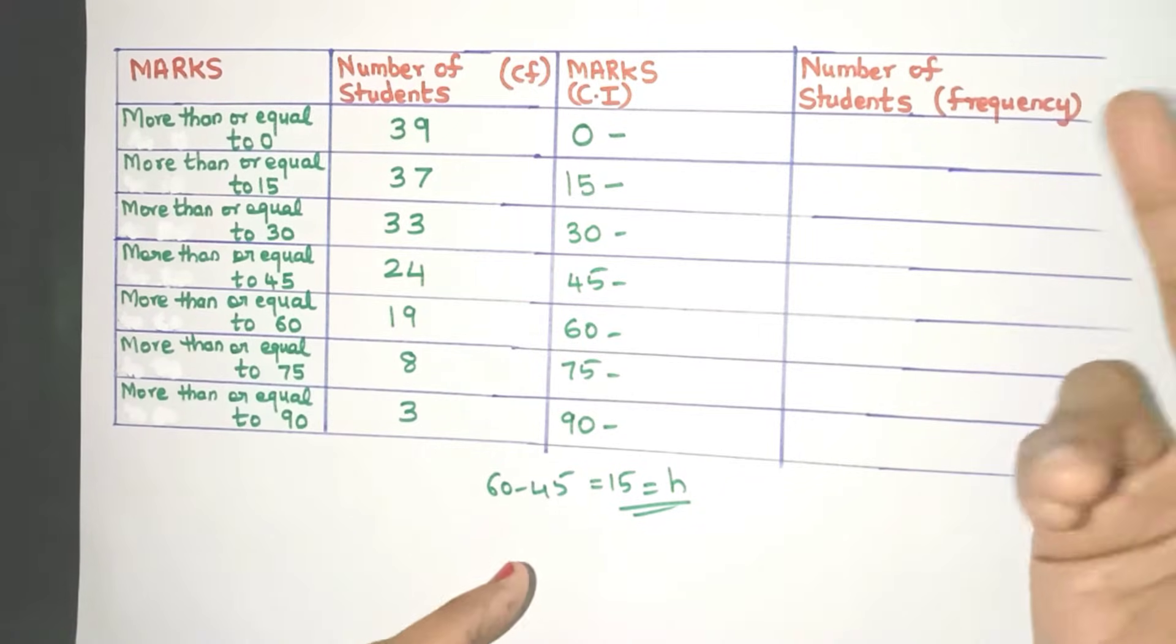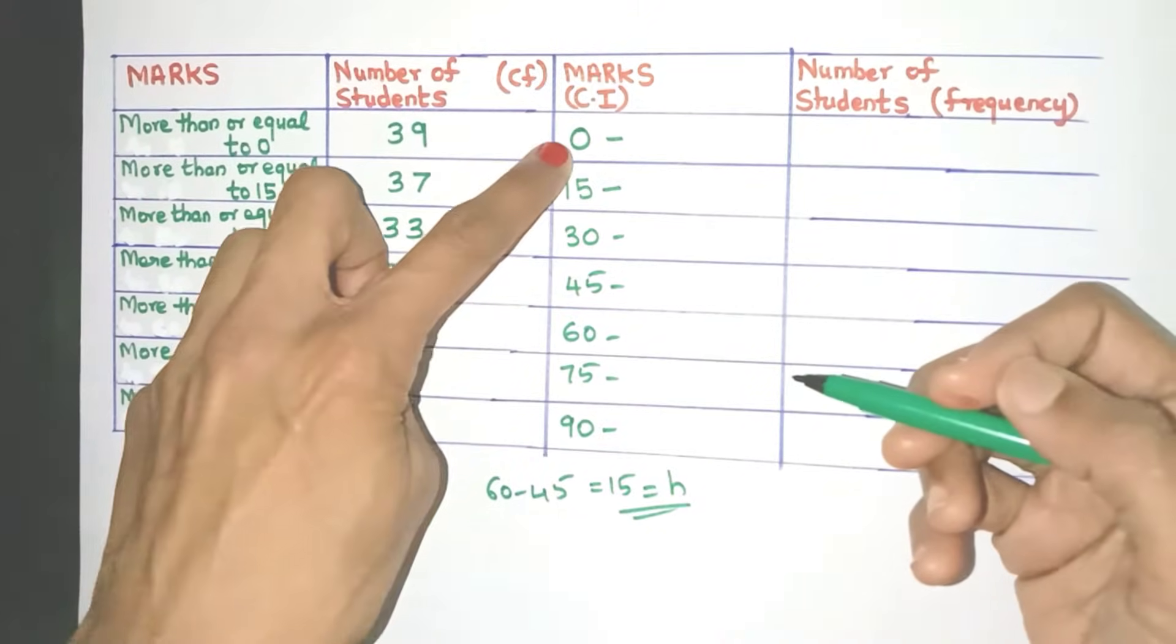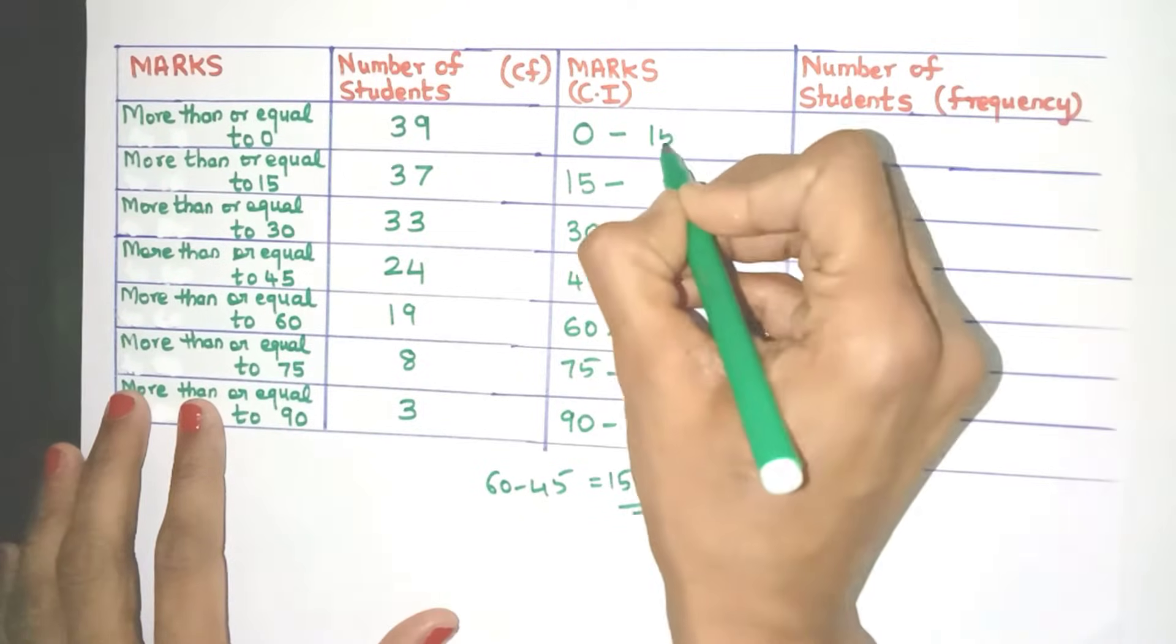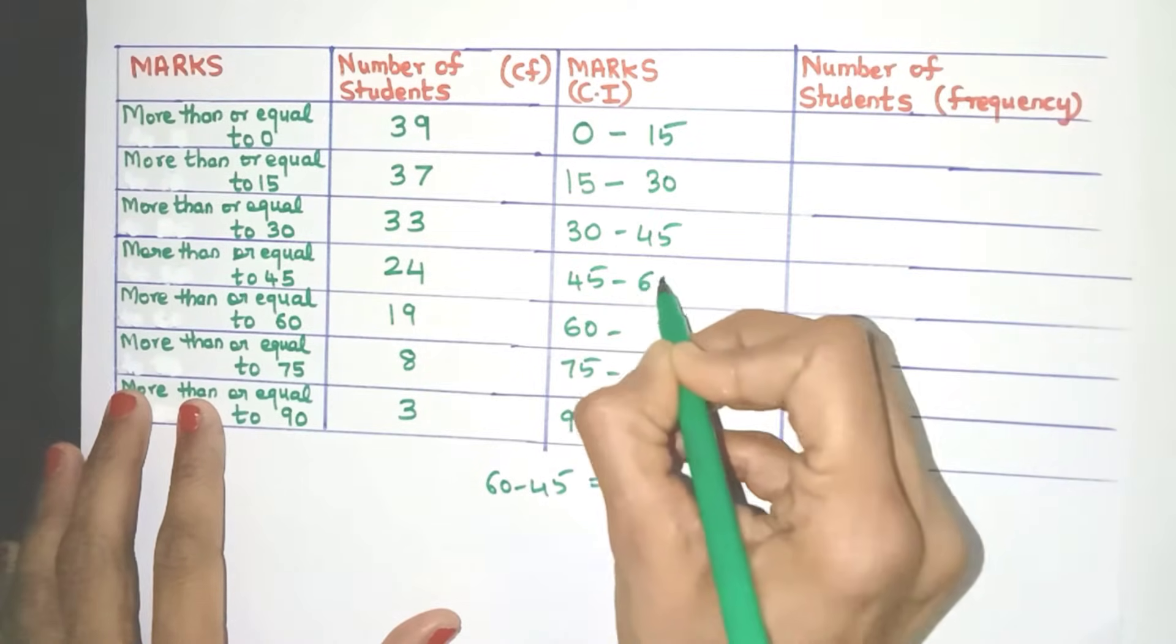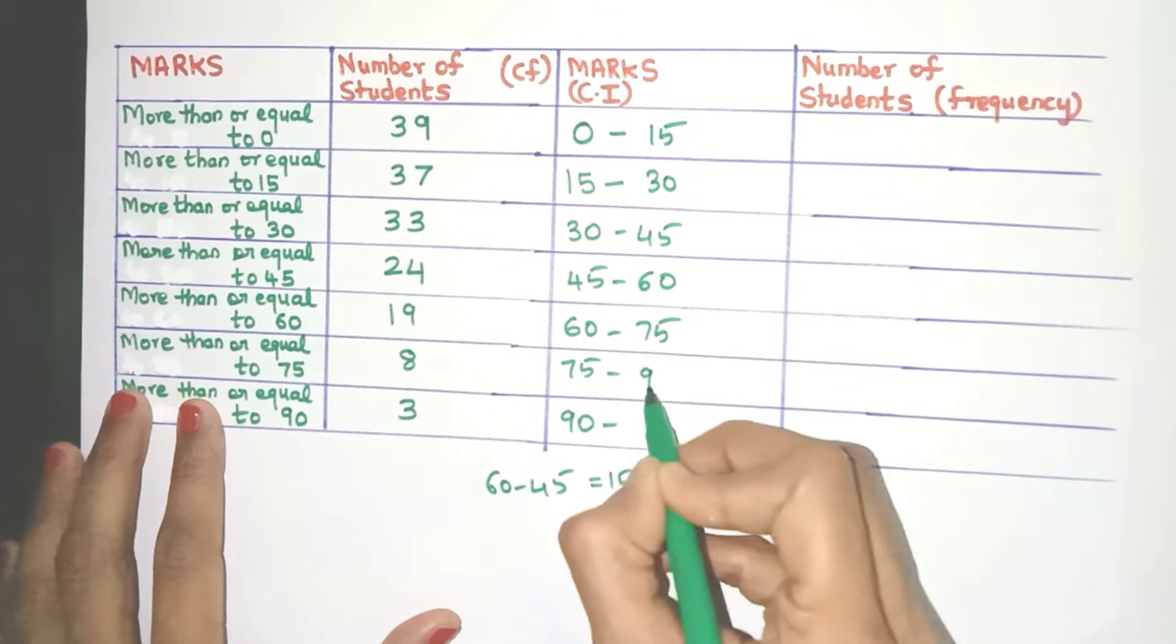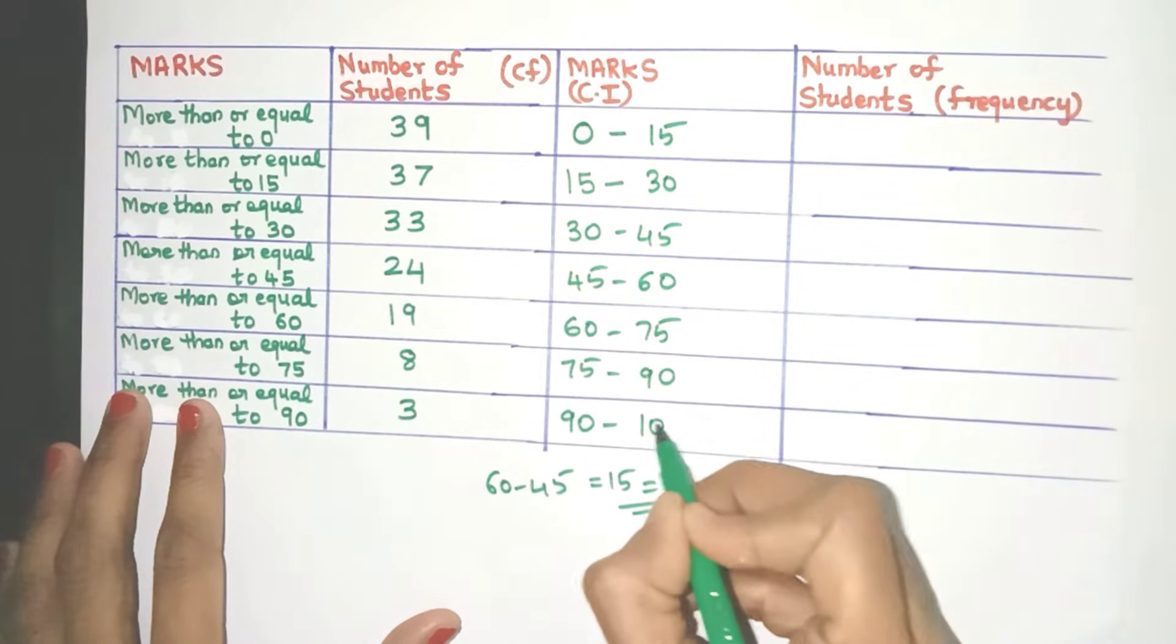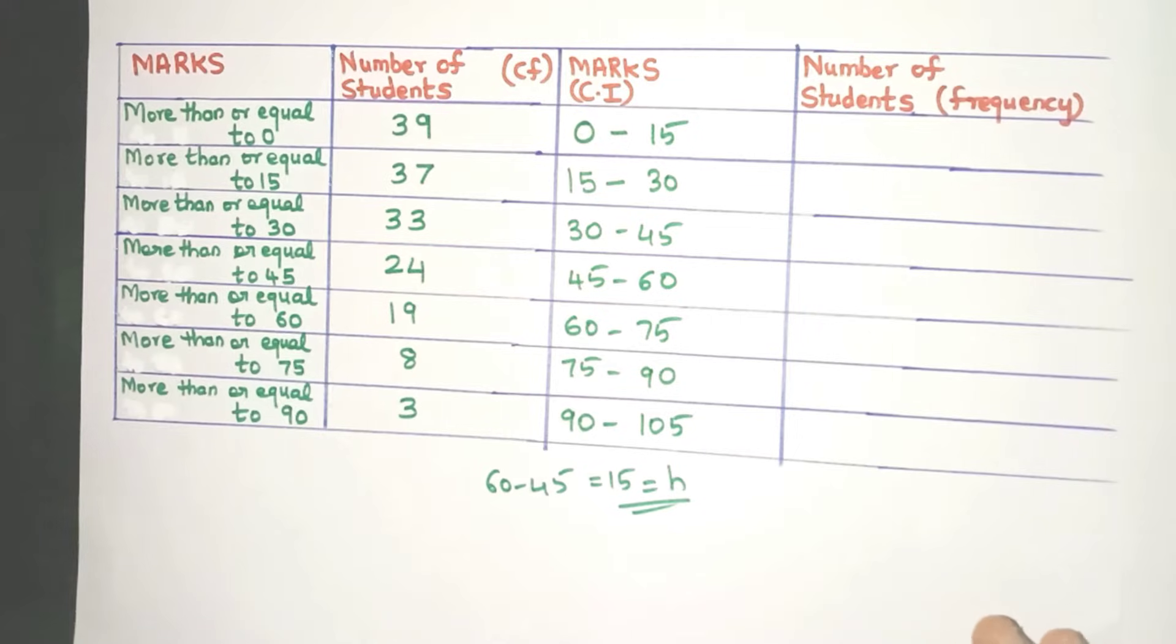So how will you find the upper limit? Just need to add the class size to the lower limit. So we'll get 15 over here, 30, 45. Here we'll get 60, 75, 90 and this will be 105.